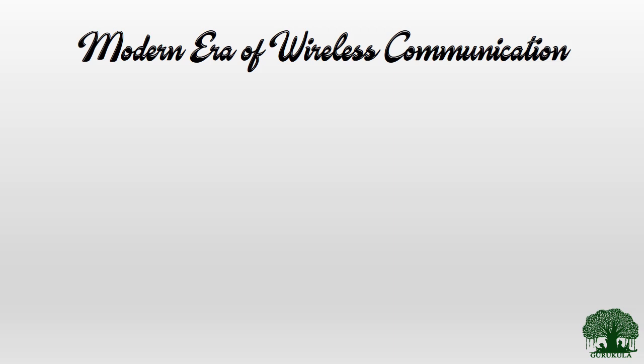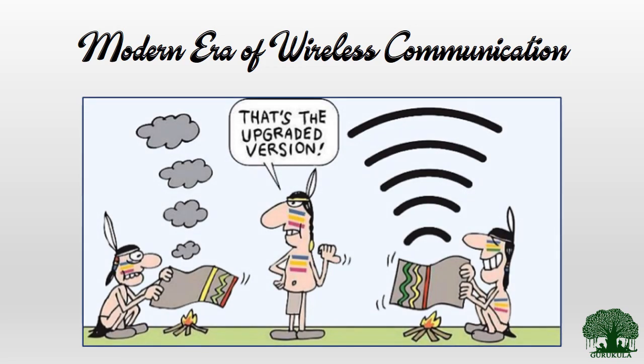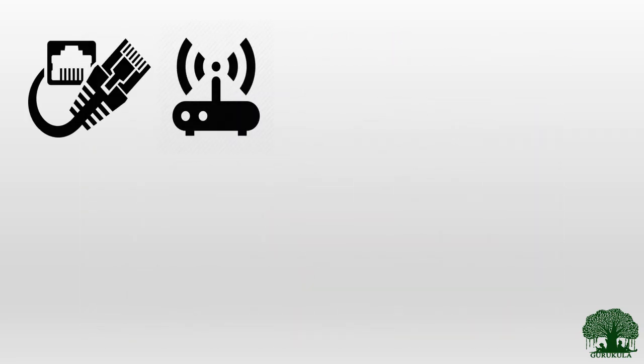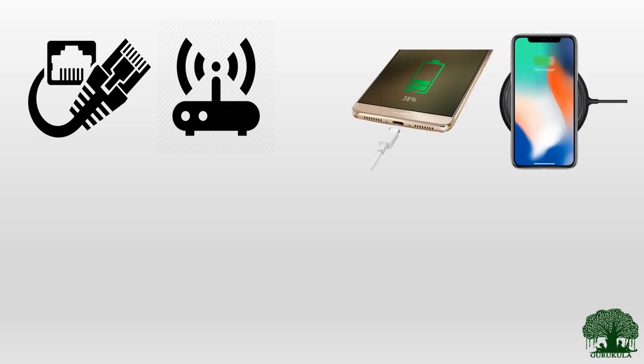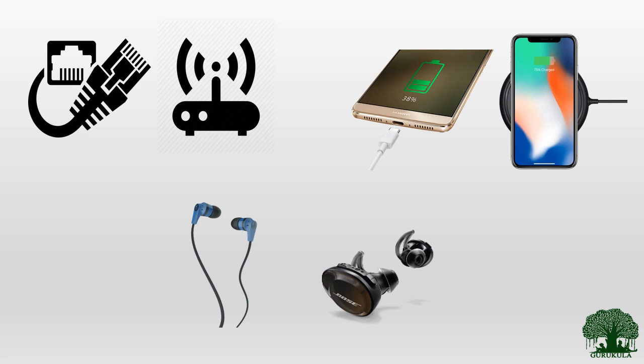Now in the modern era of wireless communication, we are living in the wireless era where most devices and most communications have become wireless — at least the front-end communication has become wireless. This picture depicts what is happening nowadays. Earlier technology has been phased out and most wireless communications have been developed over a period of time. For example, your Ethernet cable has been replaced by a Wi-Fi router, wired phone charging has been replaced by wireless charging, and similarly your headset as well.